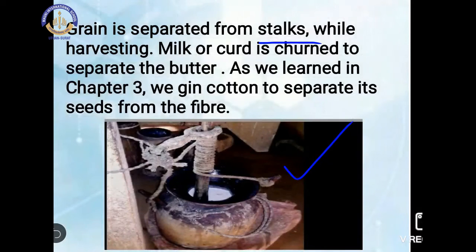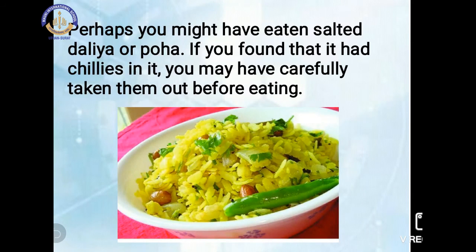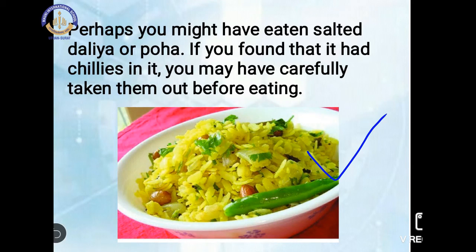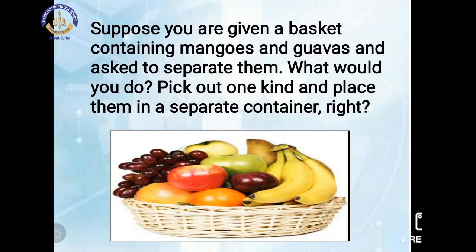In earlier times, humans used a traditional container to make butter from buttermilk or curd. Nowadays we have a grinder to get butter from buttermilk or curd. Perhaps you might have eaten salted poha; if you found it had chilies in it, you may have carefully taken them out before eating. If you like the nuts, you may have taken them out first to eat them. So this process of picking out what you want or don't want is also a separation process.